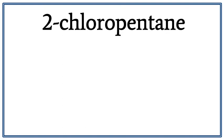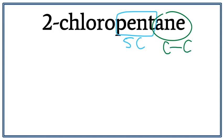Let's draw the structure for 2-chloropentane. Pent right here tells us that there are 5 carbons present in the longest carbon chain. En here tells us that this is an alkane, meaning that there are only single bonds between carbons.